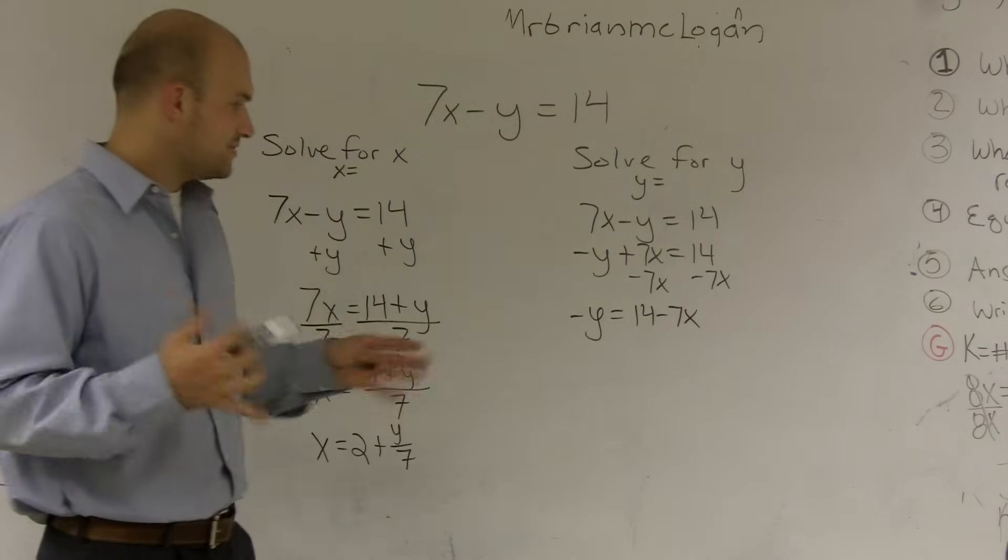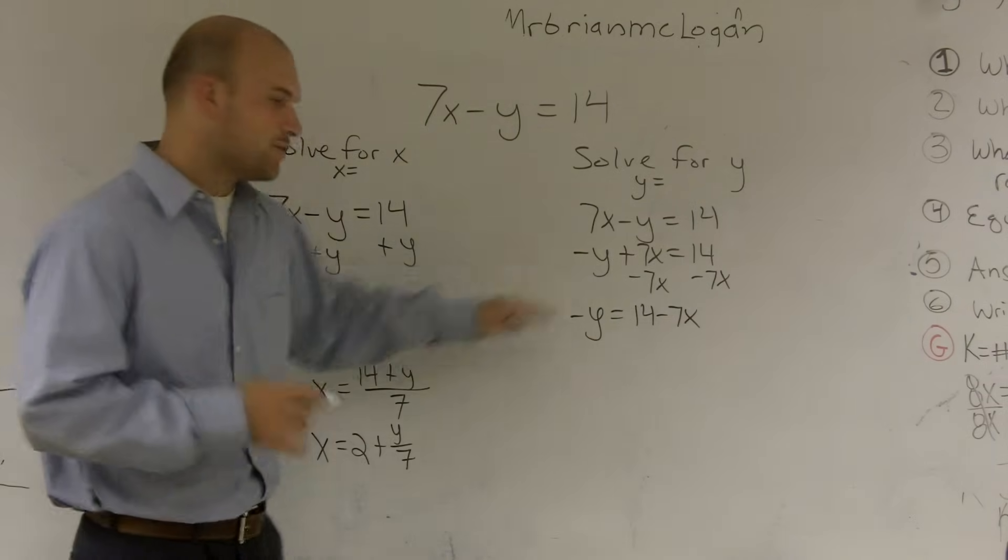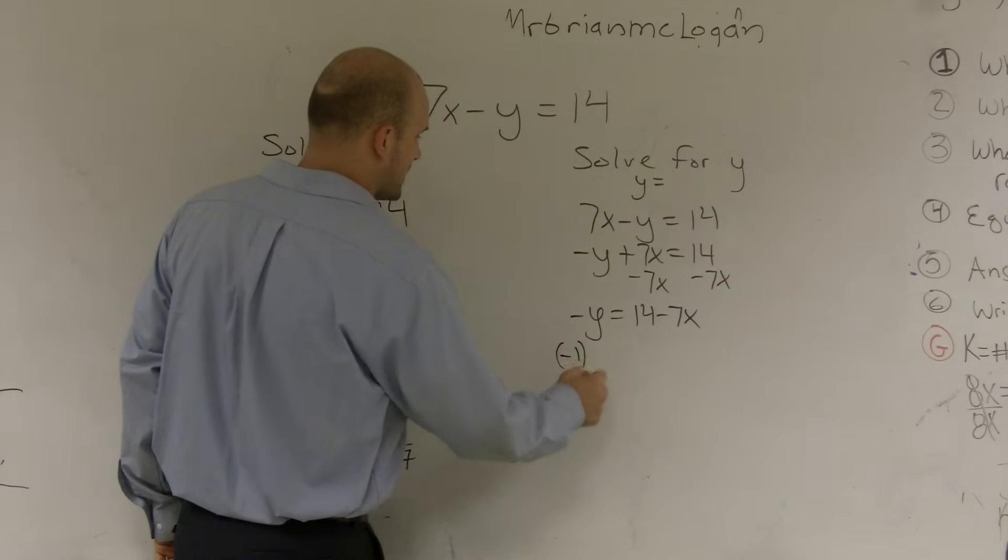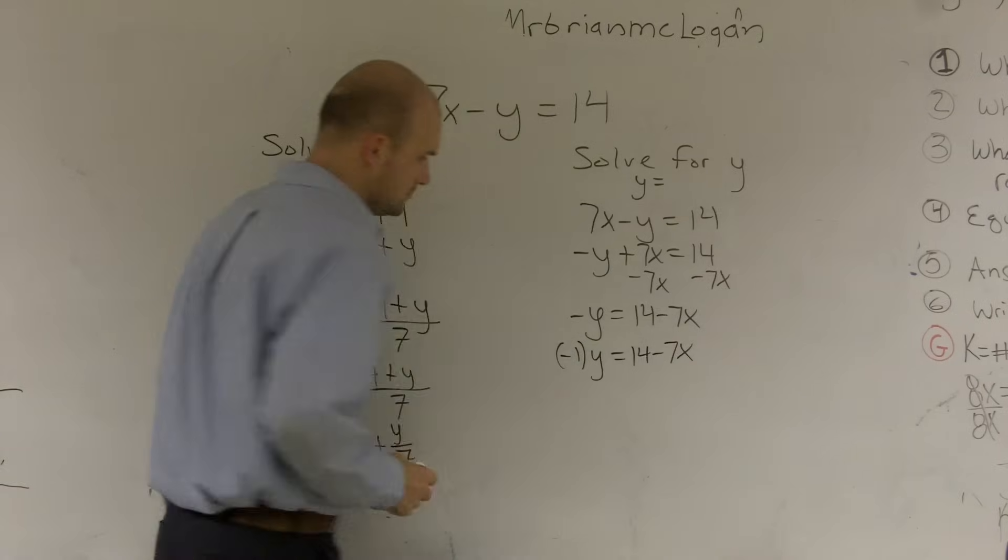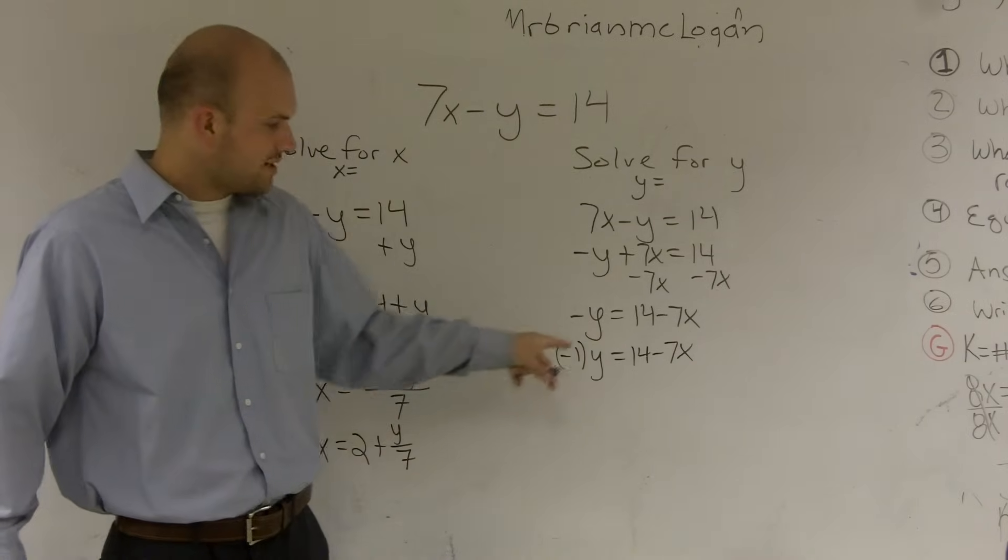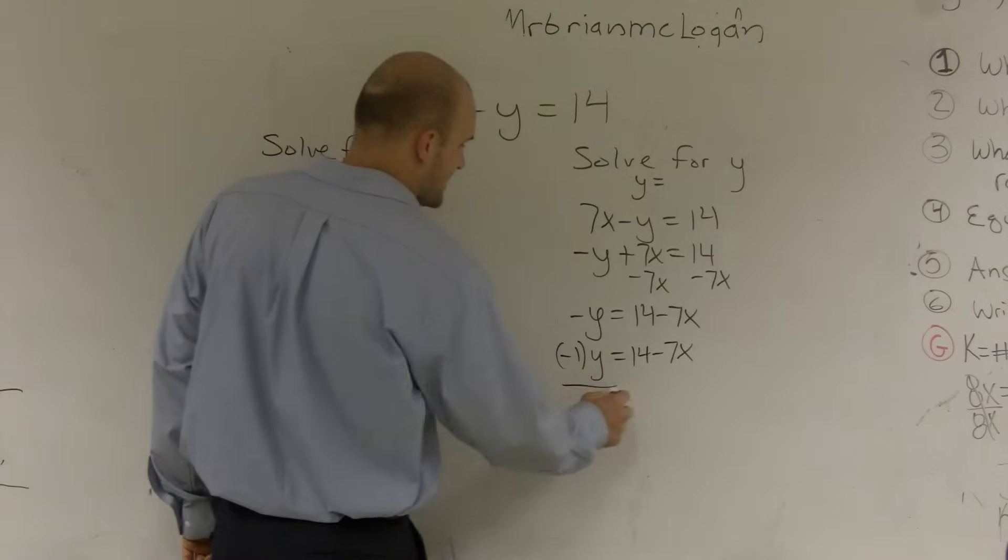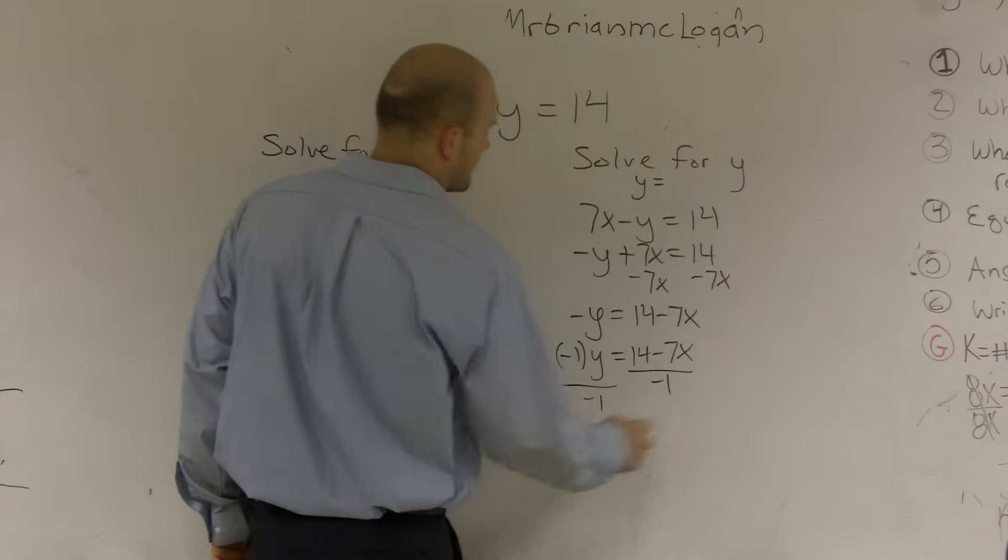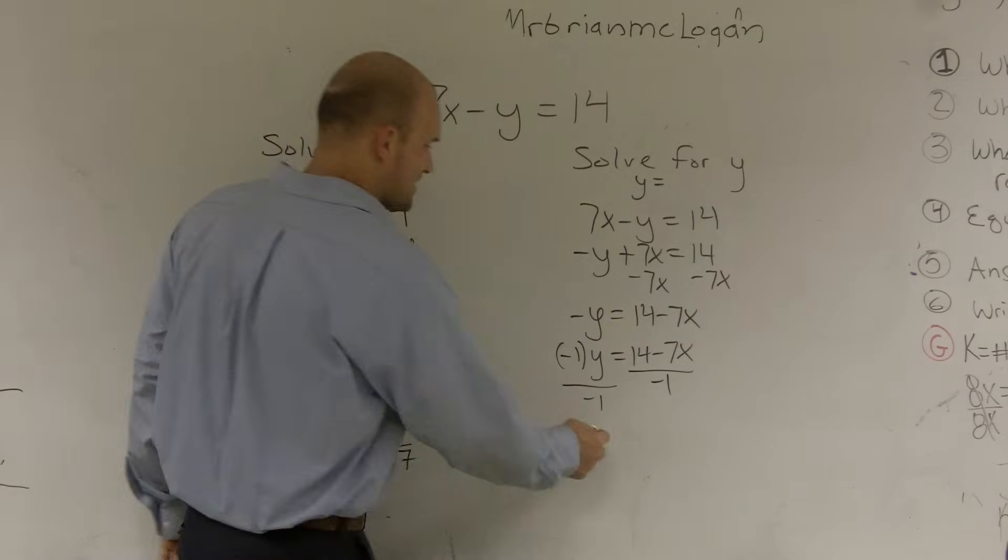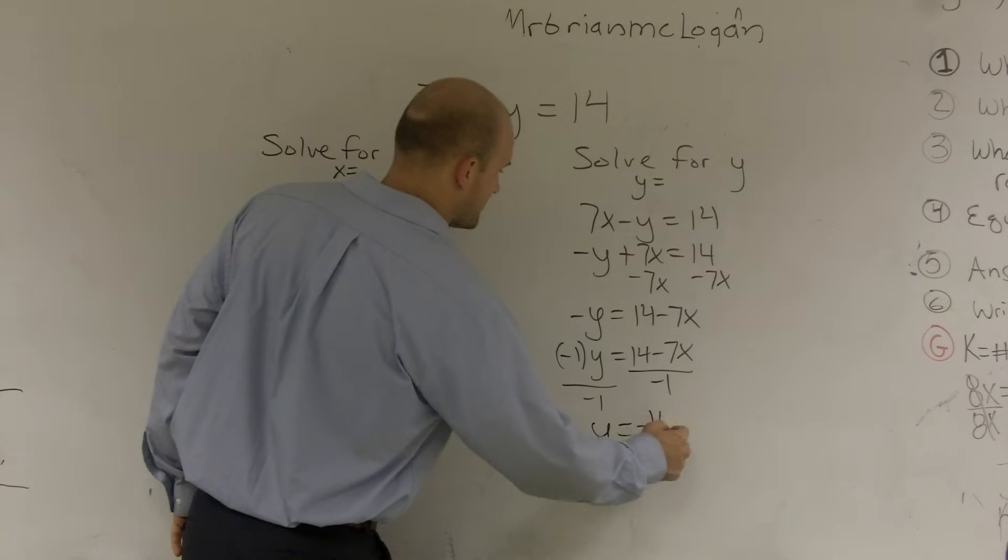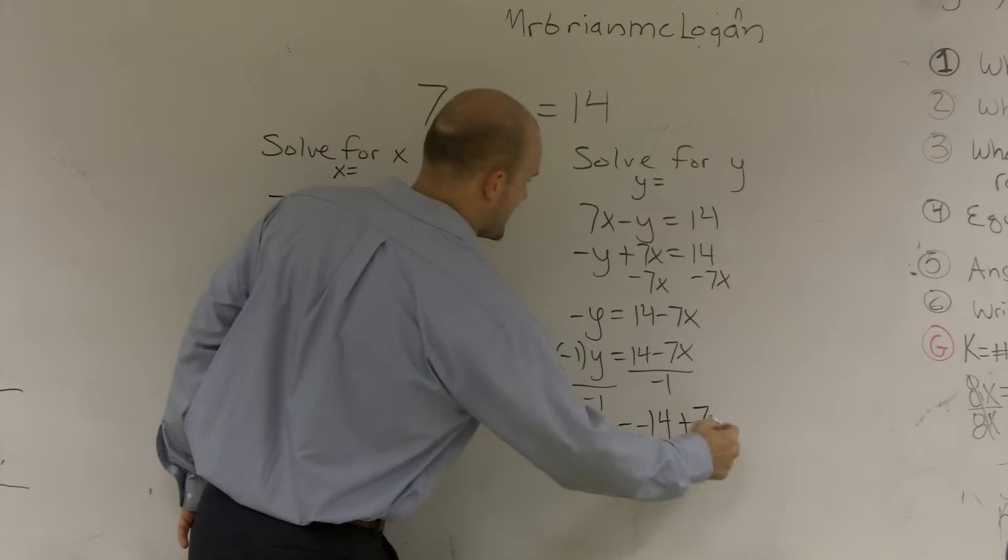Now, the next thing you have to understand is when you have a negative y, that's the same thing as negative 1 times y. So to undo a multiplication of a negative 1 times y, I'm going to want to divide by negative 1. And dividing by negative 1 into both of these terms is going to change my sign. So y equals a negative 14 plus 7x.